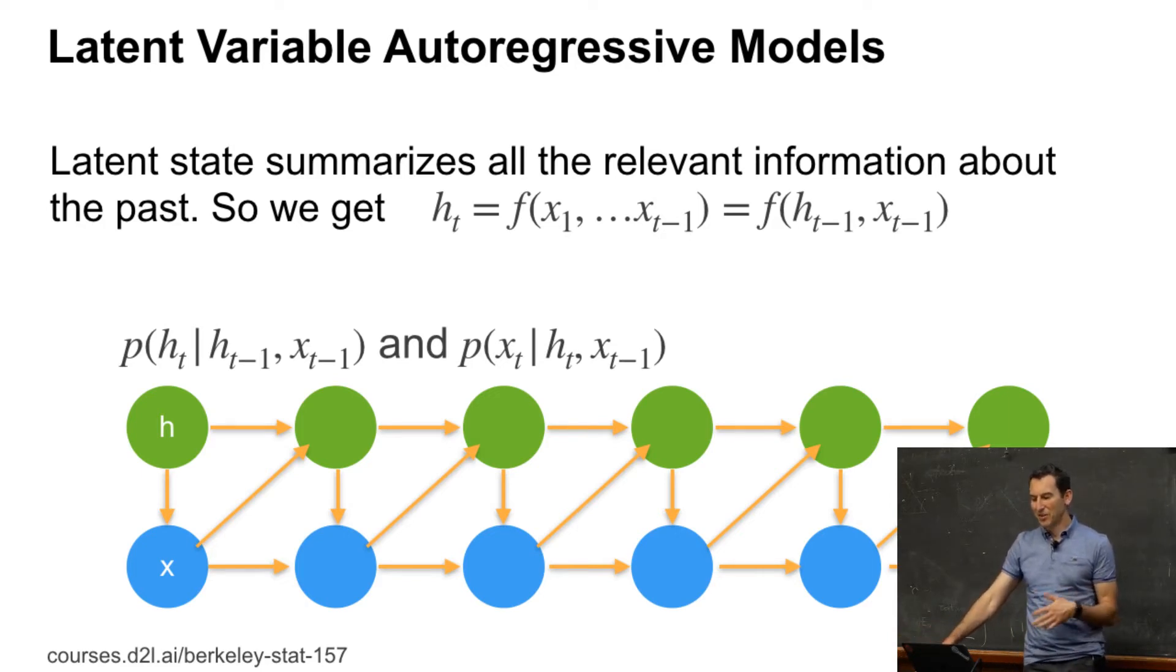And what we do is we basically engineer this function F to be one that takes as its inputs the previous statistic HT minus 1 and the previous observation in order then to allow us to make inference.